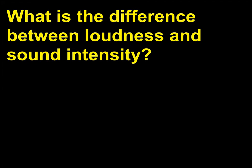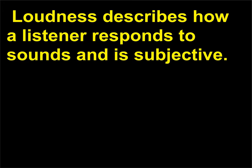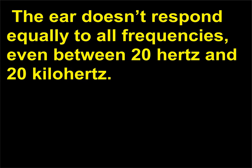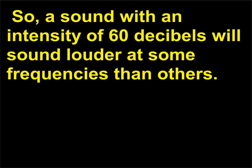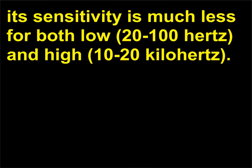What is the difference between loudness and sound intensity? Sound intensity is a physical property that depends on energy. Loudness describes how a listener responds to sounds and is subjective. The ear doesn't respond equally to all frequencies, even between 20 hertz and 20 kilohertz. A sound with an intensity of 60 decibels will sound louder at some frequencies than others. The ear is most sensitive to frequencies between 1 kilohertz and 3 kilohertz, and its sensitivity is much less for both low (20 to 100 hertz) and high (10 to 20 kilohertz) frequencies.